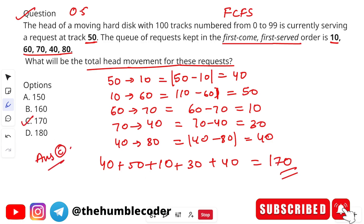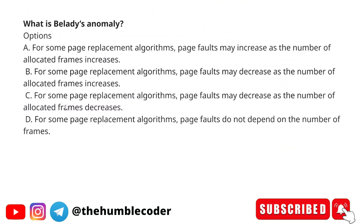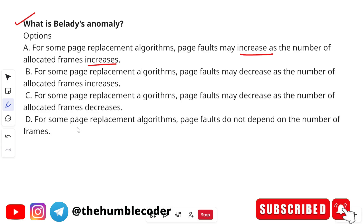The next question asks: what is Belady's Anomaly? The correct answer is option A: for some page replacement algorithms, page faults may increase as the number of allocated frames increases. Normally we expect that increasing the number of frames should reduce page faults since more pages can be stored in memory.